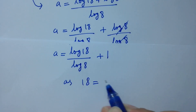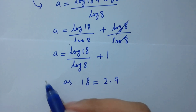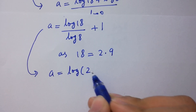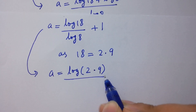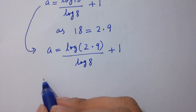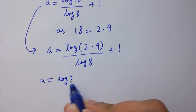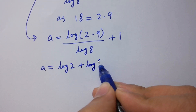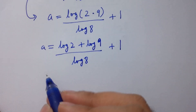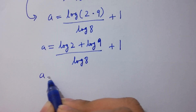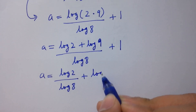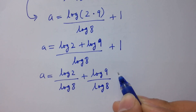Since 18 equals 2 times 9, a will be equal to log of 2 times 9 over log 8 plus 1, which gives a equals log 2 plus log 9 over log 8 plus 1.